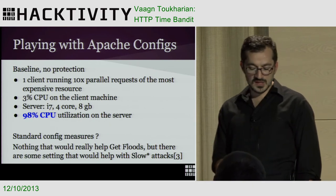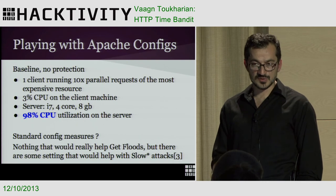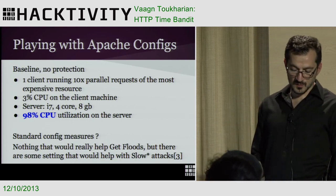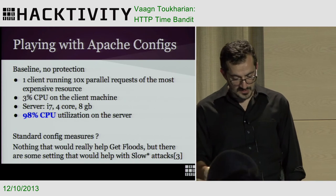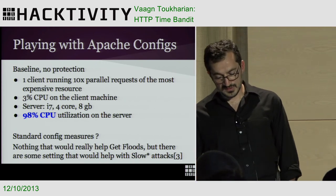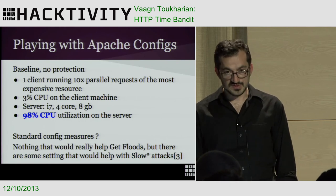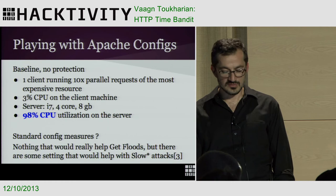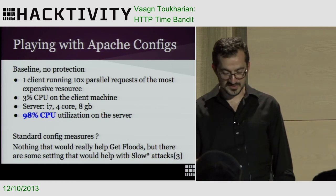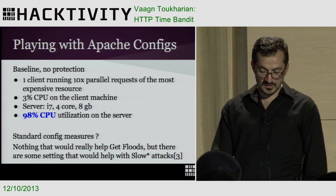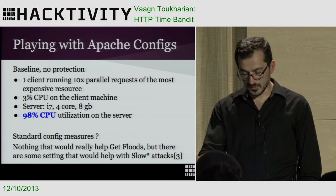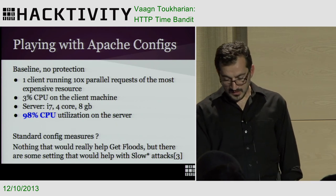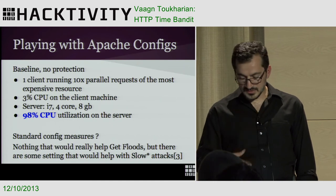We ran some tests using off-the-shelf Apache modules. The baseline was Apache without any protection enabled — the server is an i7 quad-core with 8 GB RAM. Running five parallel threads, the client machine used only three percent CPU while the server was at 98 percent almost all the time. Without any additional modules, Apache can do mostly nothing.